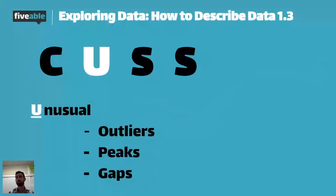Some AP teachers like to use SOCs. So S, O, C, S. Everything else is the same except for U and O are different. So they use outliers. I like to use unusual because there are some AP problems where they want you to talk about the gaps or the peaks in the distribution. So if I say SOCs, then you might not think to comment on the outliers, I'm sorry, or the gaps or the peaks. And I want to make sure my students know to comment on those things. So we use CUS. Also, I think it's just a little bit easier to remember.